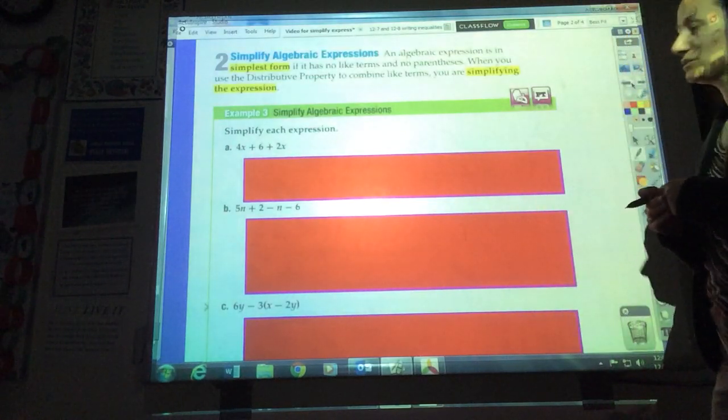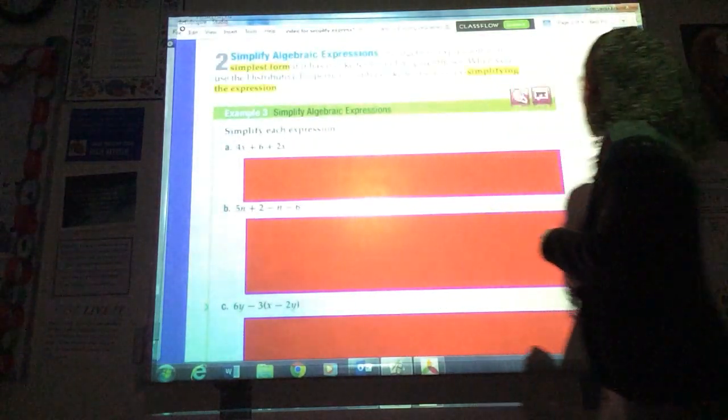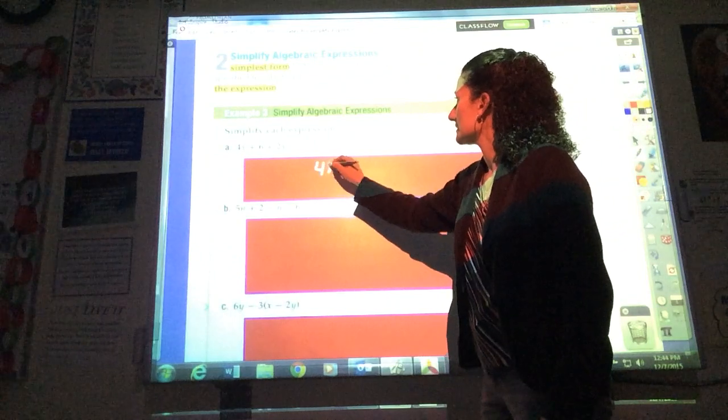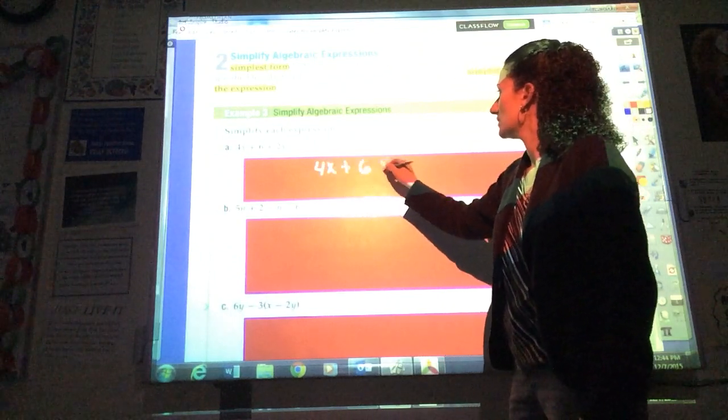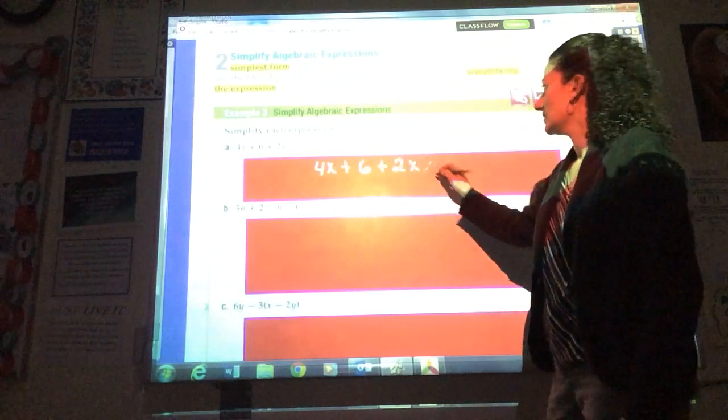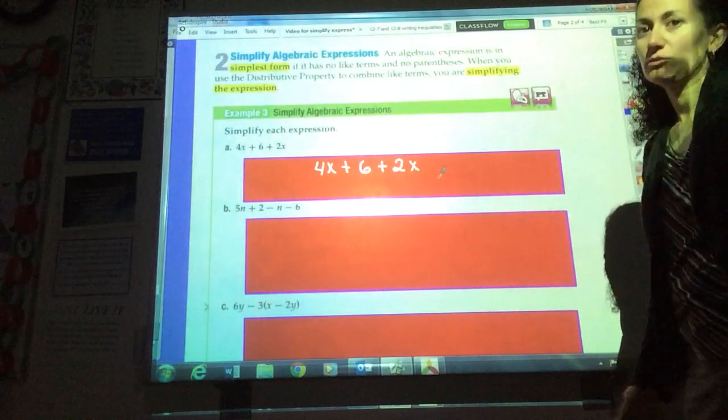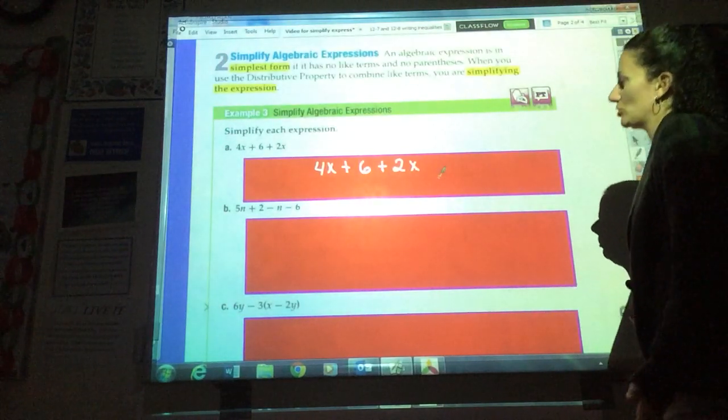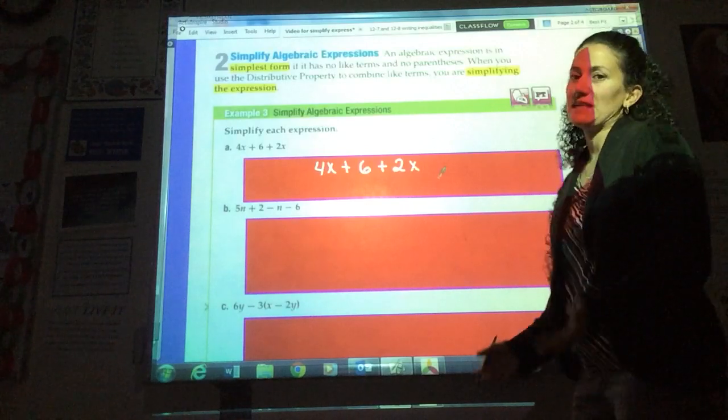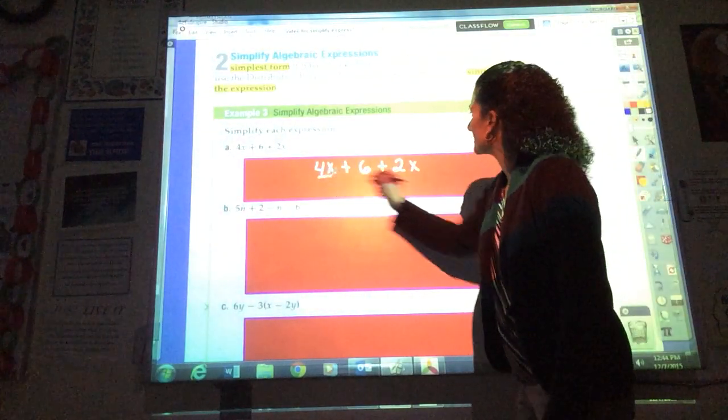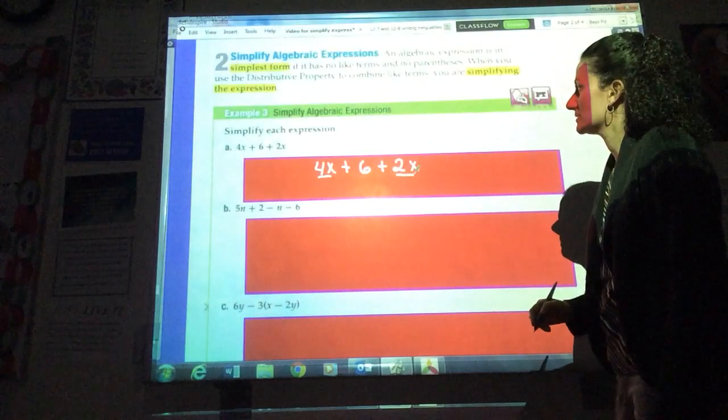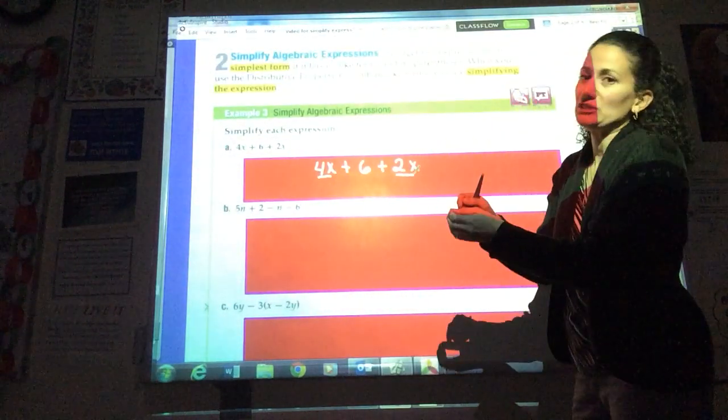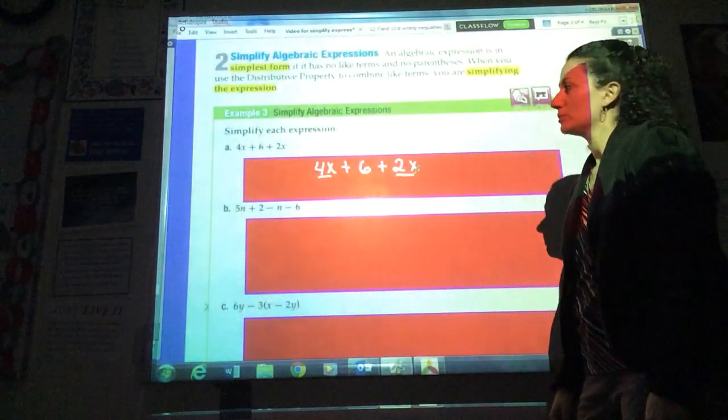Let's take a look at a few examples. Copy down this first example onto your note sheet. We have 4x plus 6 plus 2x. One of the simplest things to do when simplifying an expression is to look for like terms. Like terms have the same variables. So 4x and 2x are like terms because they have the same variable.